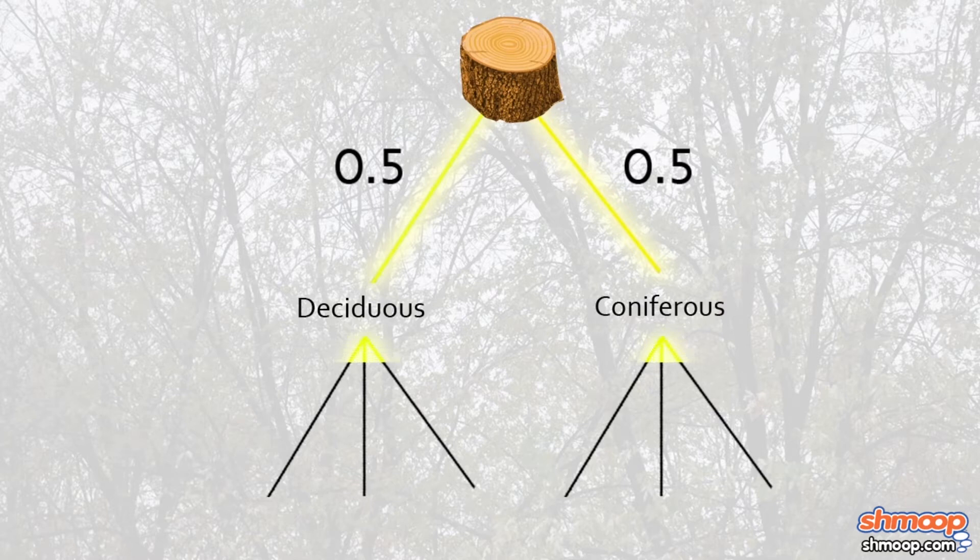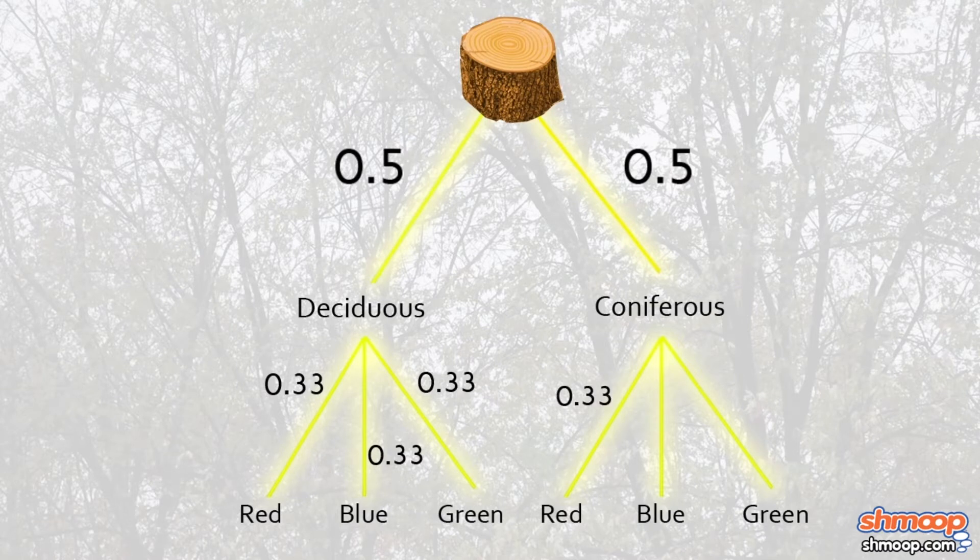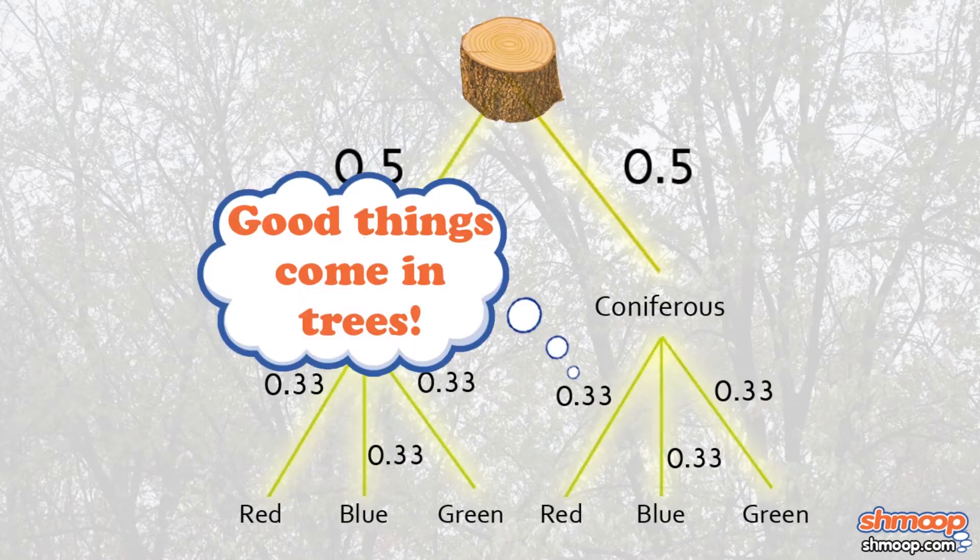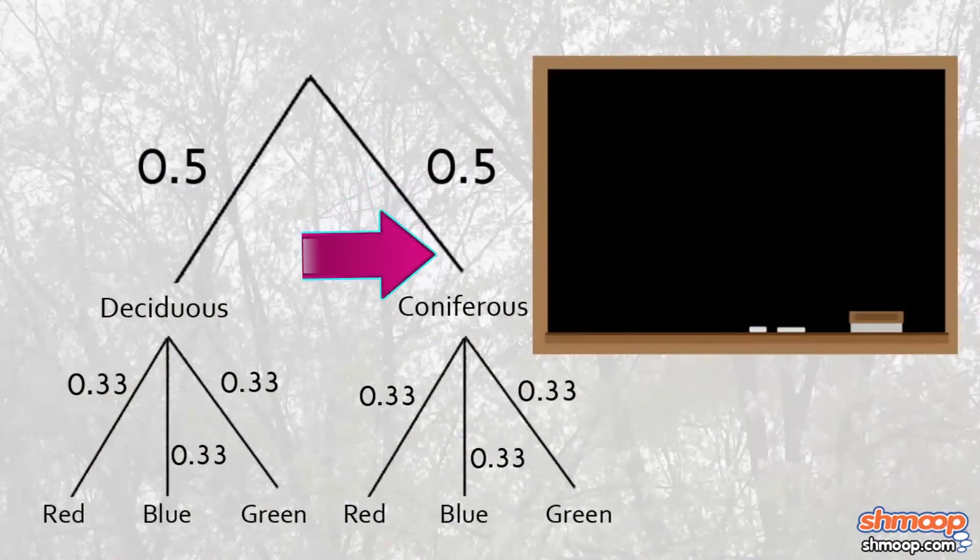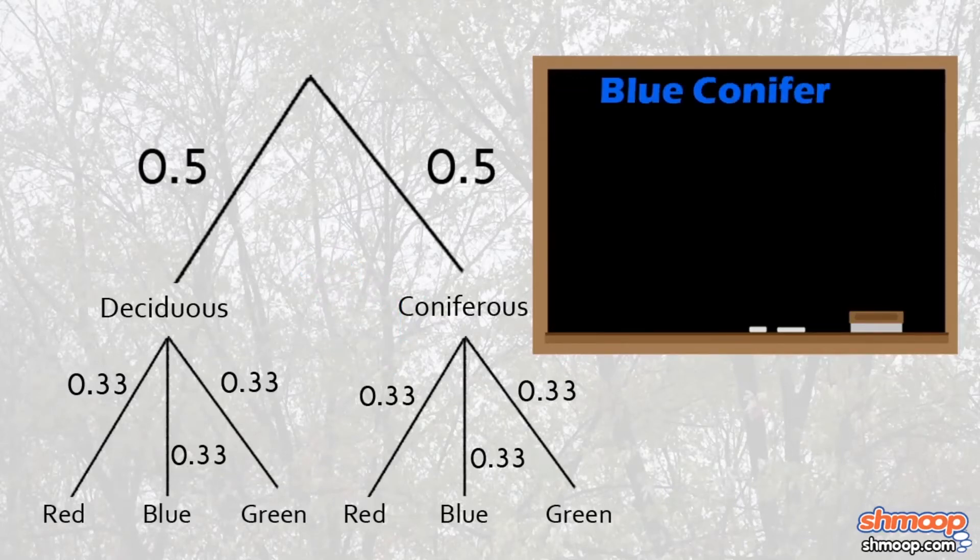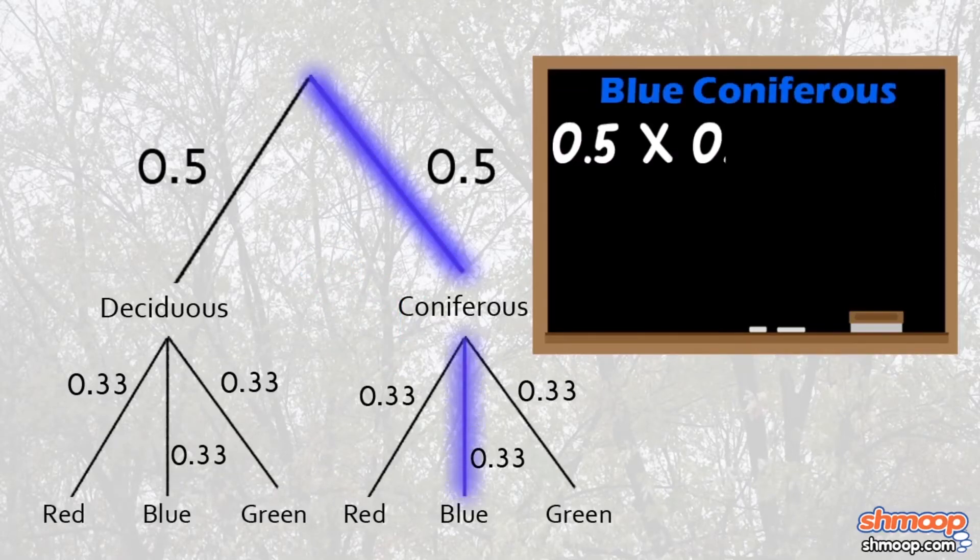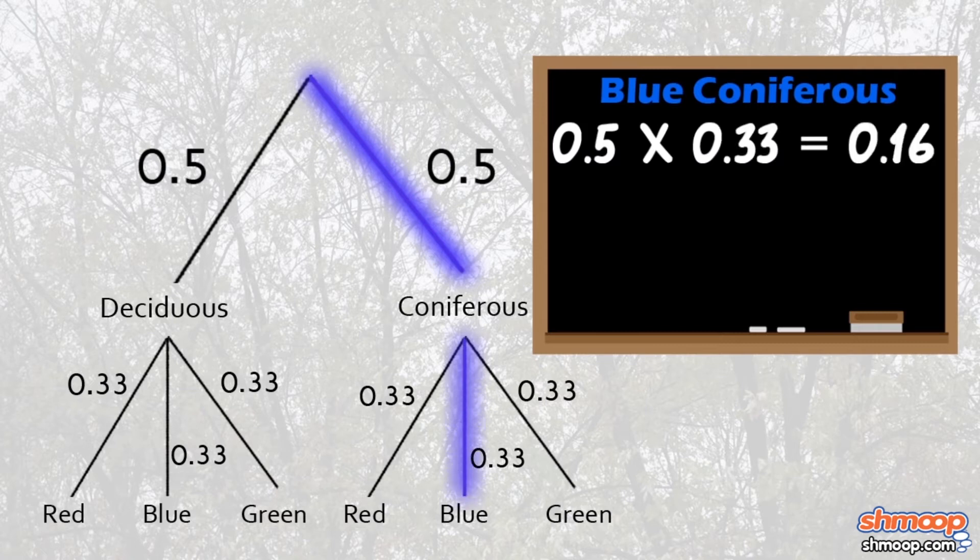For each type of tree, there are three small branches representing the burlap colors. 33% chance for each of those, so we'll label it 0.33. Now, to get the odds of any one combination being drawn, we simply multiply the first percentage by the second. So chances of drawing a coniferous tree with a blue burlap: 0.5 times 0.33, which equals 0.16, or 16%.